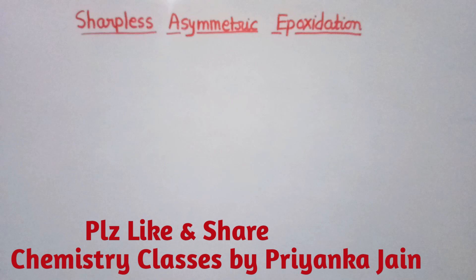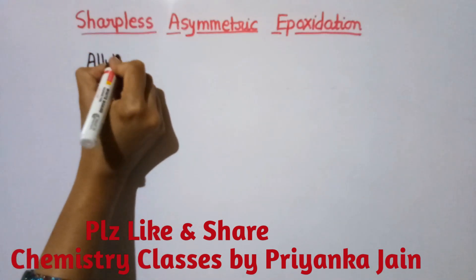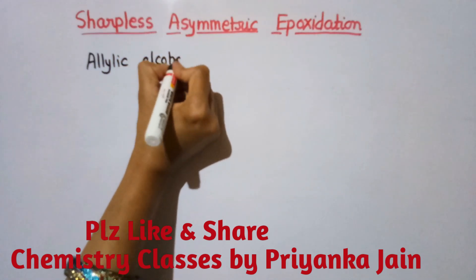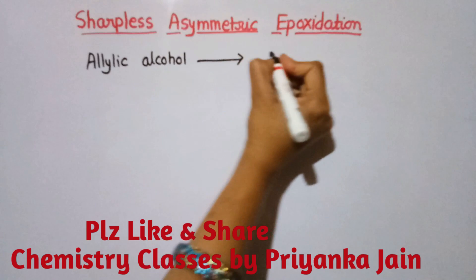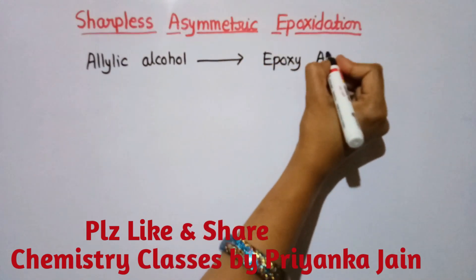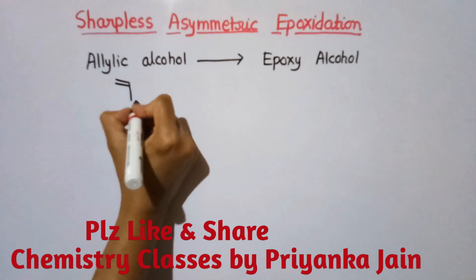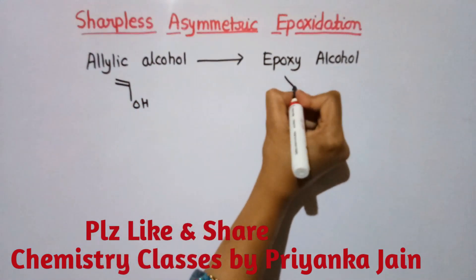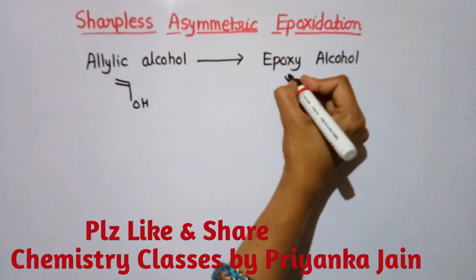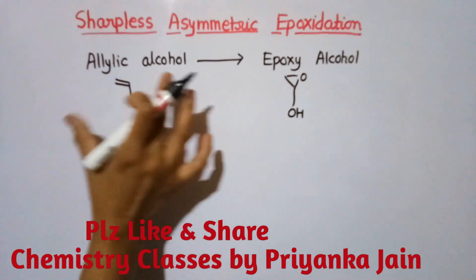Welcome to chemistry class. Today we are studying a very important name reaction: Sharpless Asymmetric Epoxidation. It is the conversion of allylic alcohols to the corresponding epoxy alcohols. If we have an allylic alcohol with an OH group, it gets converted to give an epoxy ring — that is the total conversion.